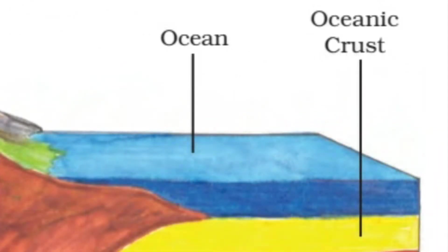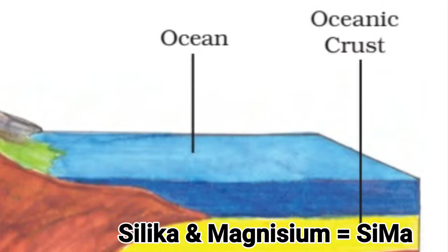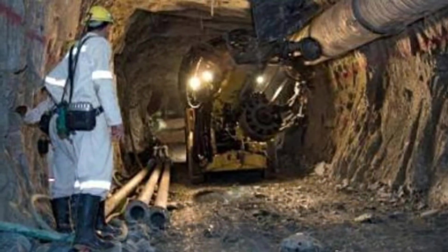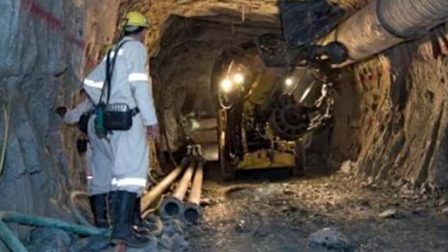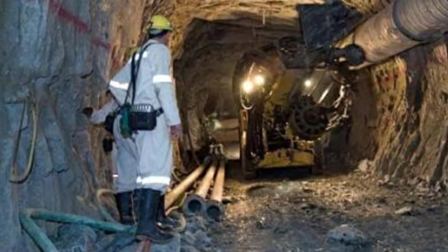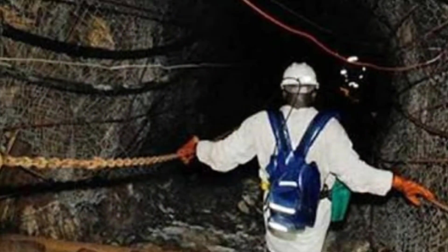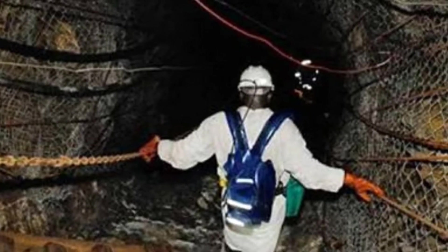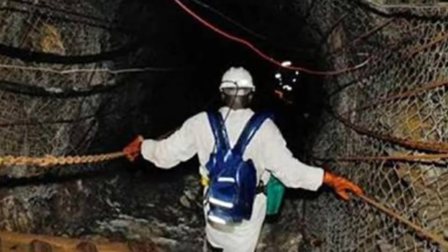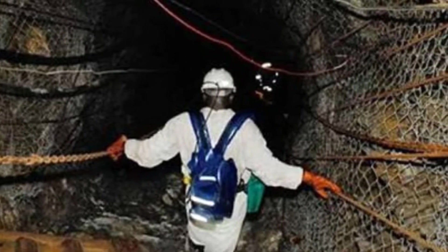Deep inside the ocean there is a crust called oceanic crust. The oceanic crust mainly consists of silica and magnesium — Si from silica and Ma from magnesium, so it is called SIMA. The deepest mine in Africa is about 6000 meters, meaning 6 km. But the depth of the whole crust is 40 km — 35 km continental and 5 km oceanic — so 6 km is just like a pinch in Earth's crust.